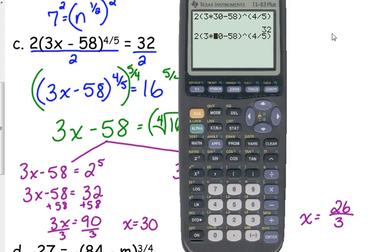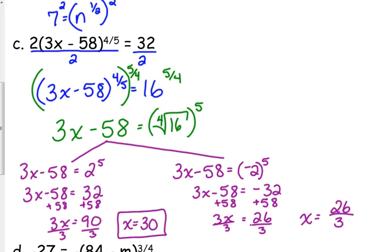Let me plug in 26 over 3. You can put that in parentheses if you want to. You really don't have to, but it also gives us 32. So if when you raise it to the reciprocal power, if the root is even, you have to consider the positive and the negative. If the root is even, you have to consider the positive and the negative. If it's an odd root, then you only have one choice. The cube root of negative 8 is negative 2. It's not also positive 2.